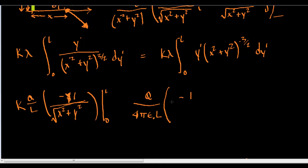Okay, so we get negative 1 over the square root of x squared plus l squared minus, and now we'll plug in a 0 here, and so this becomes negative 1 over x squared square rooted, so that becomes x. And then that's it.